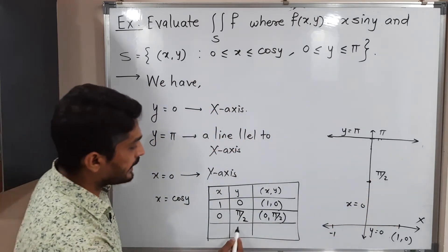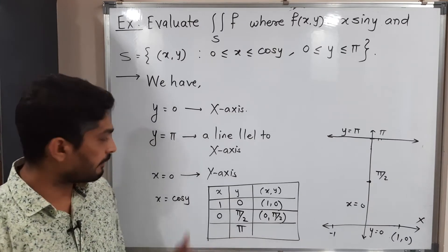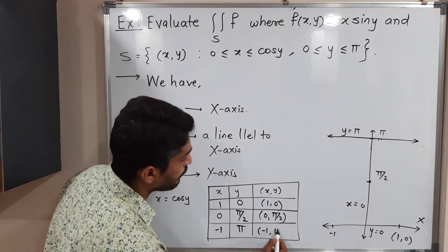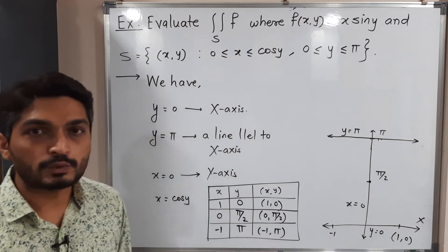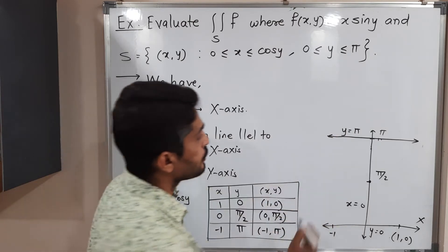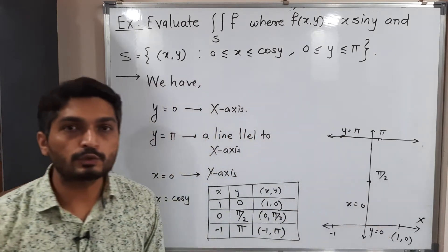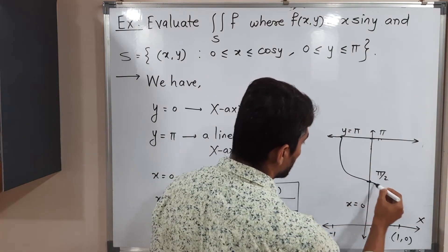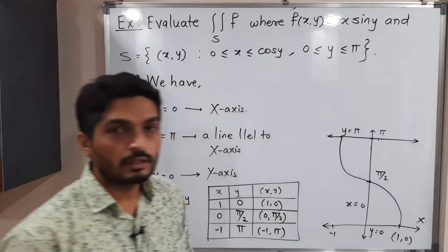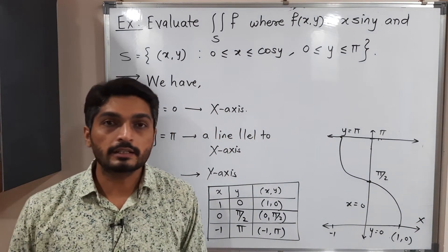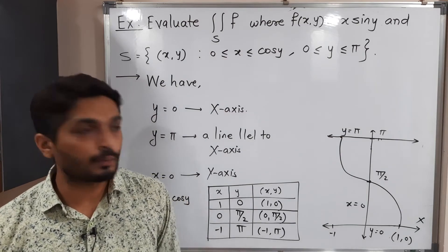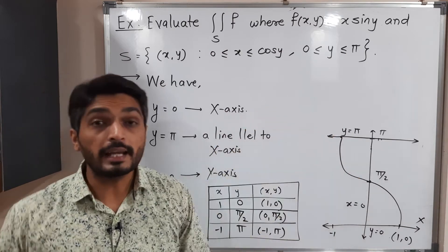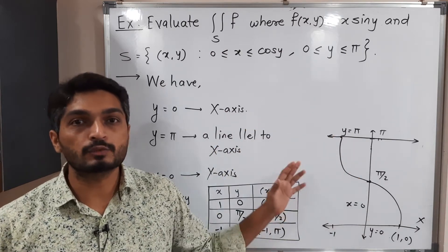Now putting Y equals π: cos(π) is minus one, so X is minus one and the point is (−1, π). We join these three points by a freehand cosine curve. The region bounded by the X axis, Y axis, the line Y equals π, and this cosine curve gives us the required region.